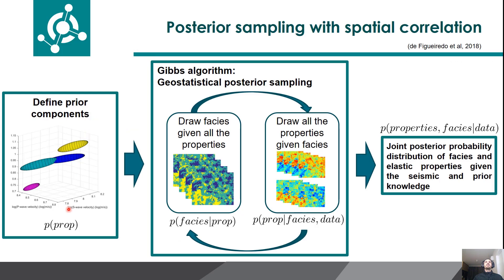We have proposed Gibbs sampling, which is a Markov chain Monte Carlo algorithm. The main input is the Gaussian prior components, and in each iteration of the algorithm we sample a facies realization given the properties, and then we sample the properties given the facies and the seismic data. The sampling of the properties is performed using just statistical methods. In the end, we have an ensemble of multiple solutions drawn from the posterior, which can be used for uncertainty quantification.